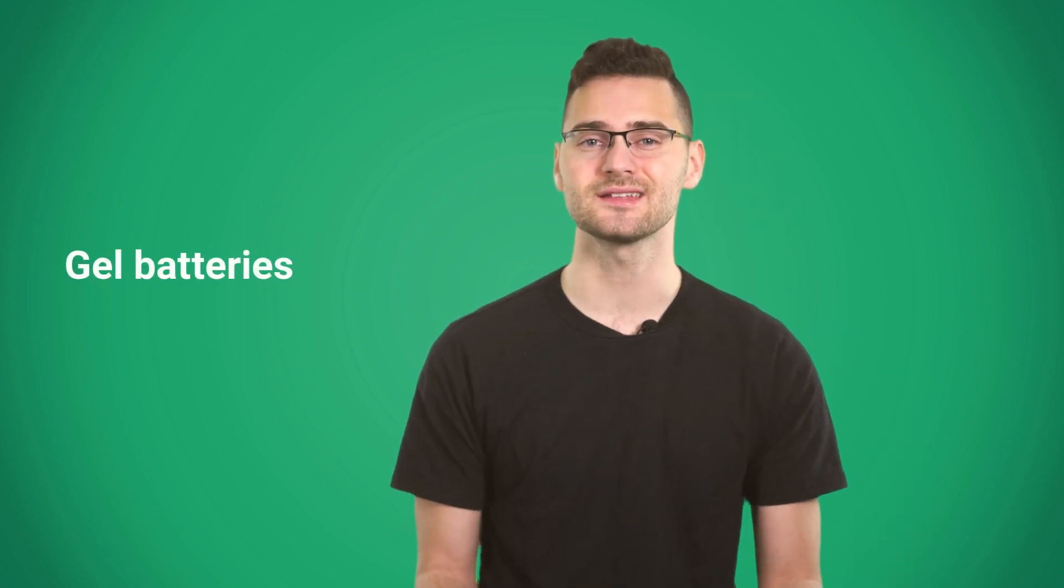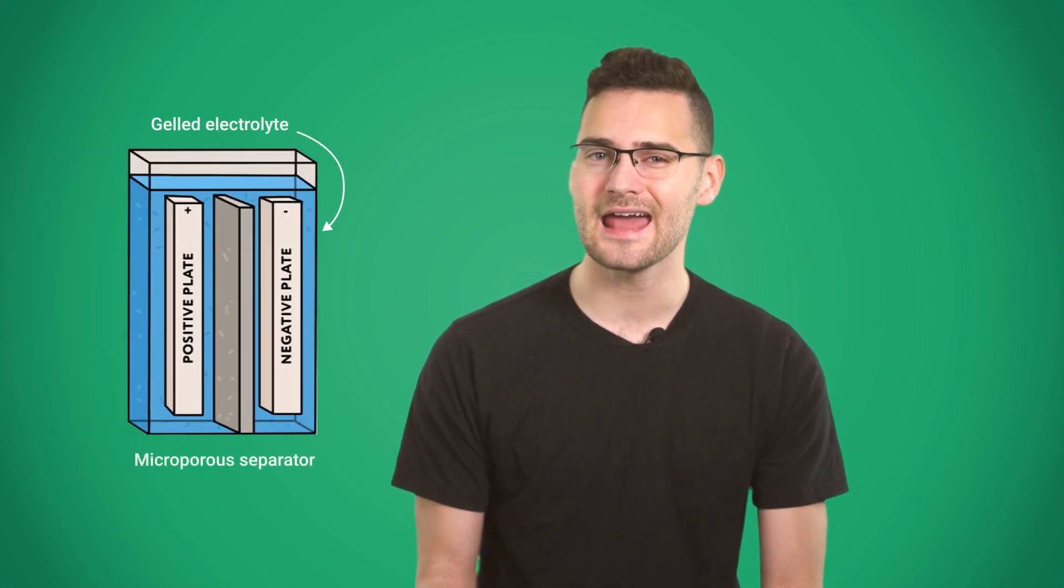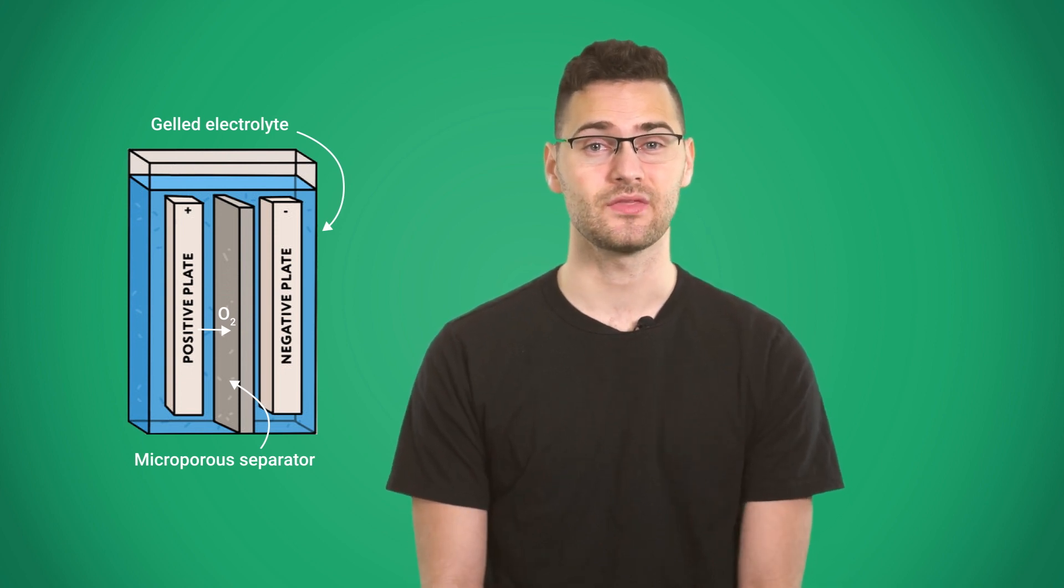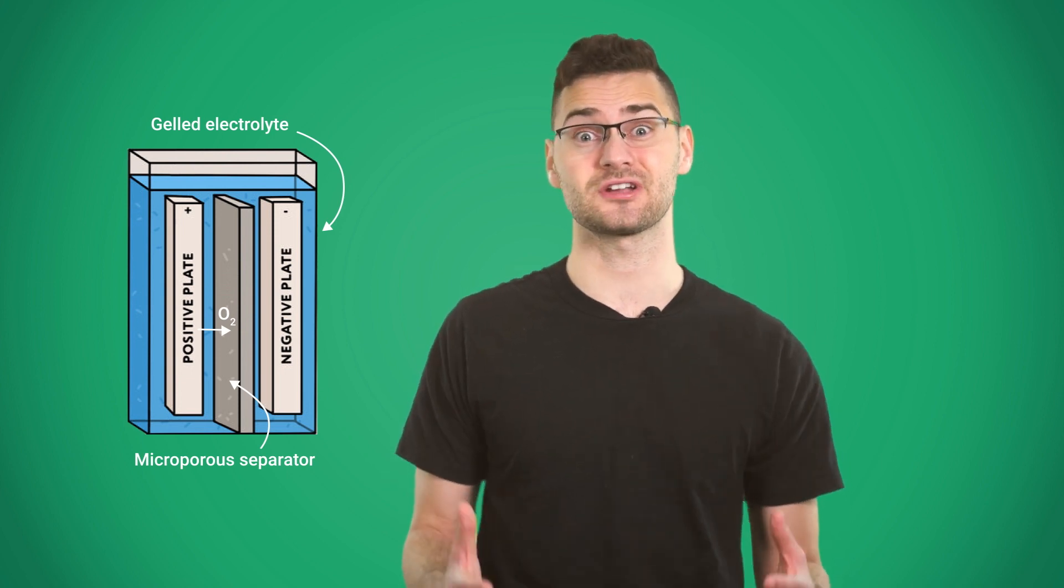Gel batteries are a second subtype of lead acid batteries. Technically, it's a wet cell battery, but a silica additive makes the electrolyte stiff, so it doesn't have the risk of spilling. They are also much better at withstanding extreme temperatures. The problem with gel batteries is their voltage sensitivity. They really don't like being overcharged. Their safe depth of discharge is slightly higher, about 75 percent.